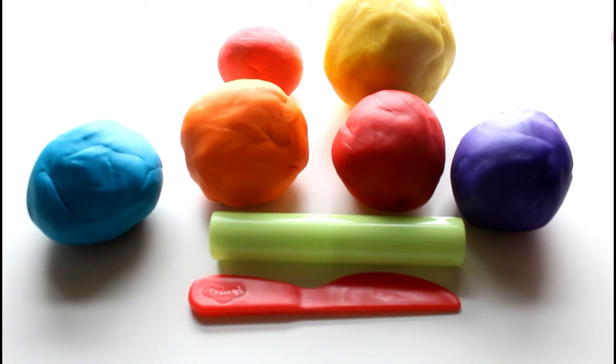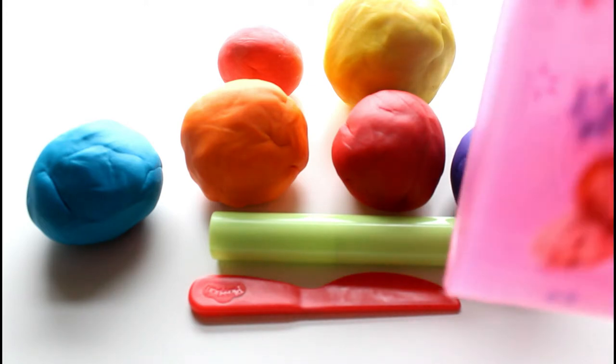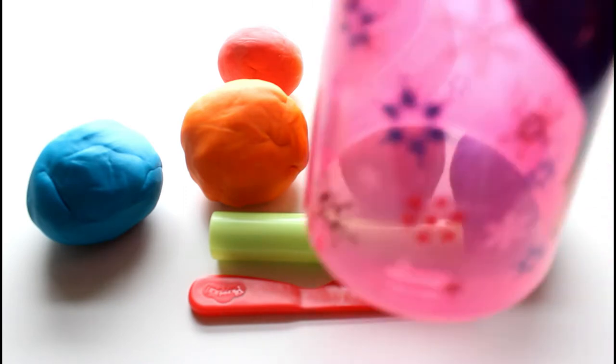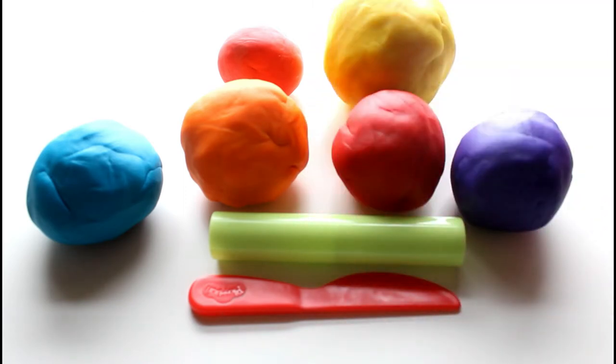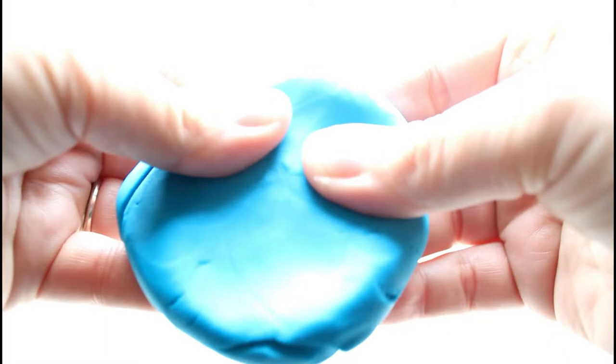Now to cut the cake, I didn't have a circle cutter so we're just going to use this Disney Elsa and Anna cup to make the cake. So are you guys ready to make this beautiful rainbow play-doh cake? Let's get started.